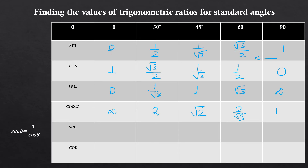For sec θ, we know sec θ = 1/cos θ, so we take the reciprocal of the cosine values. Sec 0° = 1; sec 30° = 2/√3; sec 45° = √2; sec 60° = 2; and sec 90° is undefined (reciprocal of 0).